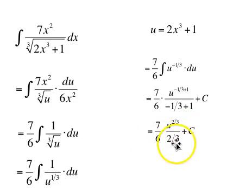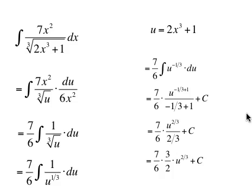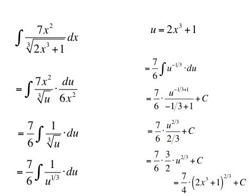Dividing by 2/3 is the same as multiplying by 3/2. So we get 7/6 times 3/2 times u to the 2/3 plus c. To simplify: divide the top by 3 and the bottom by 3, leaving 1 upstairs and 2 downstairs; 2 times 2 is 4, giving us 7/4 times u to the 2/3 plus c.